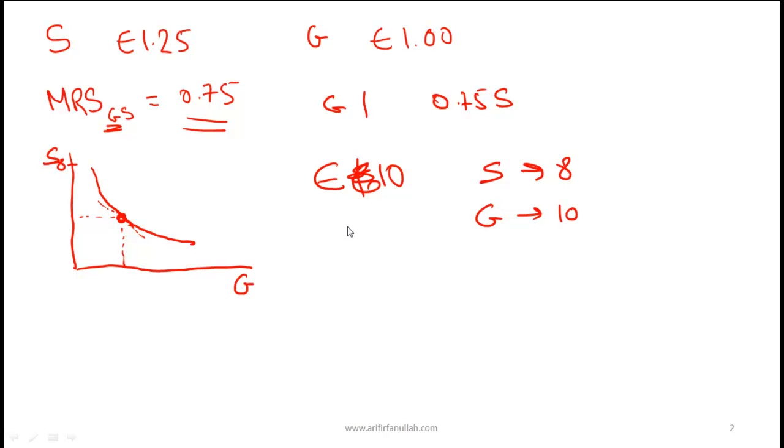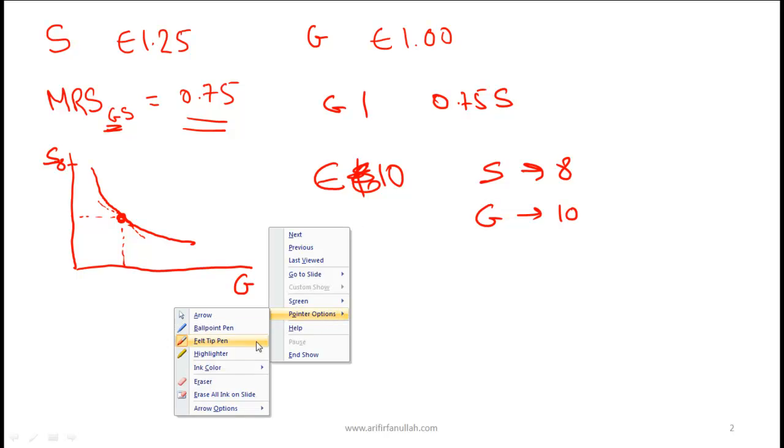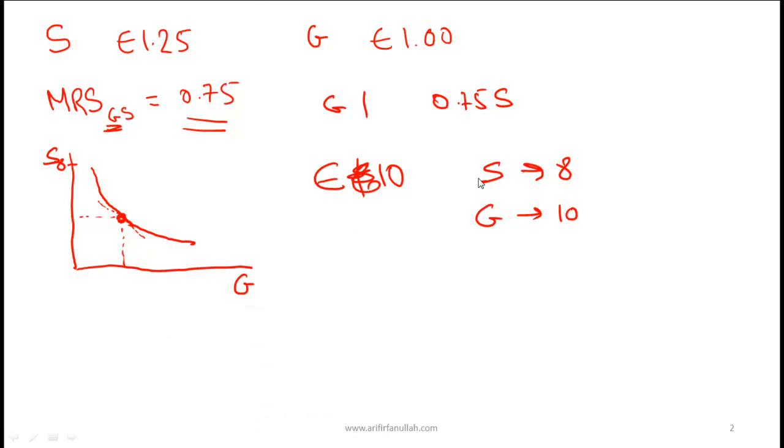Now in blue I am going to draw the budget constraint line. So what is the slope of this given that the x-axis intercept is 10 and the y-axis intercept is 8? The slope of this line is going to be 0.8.